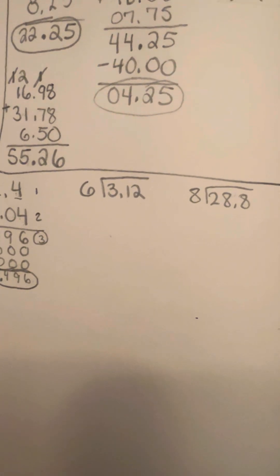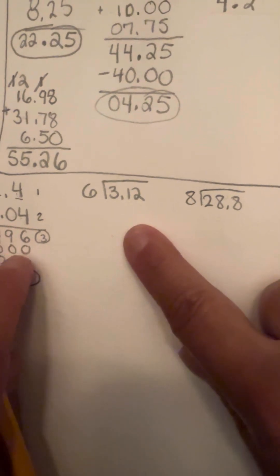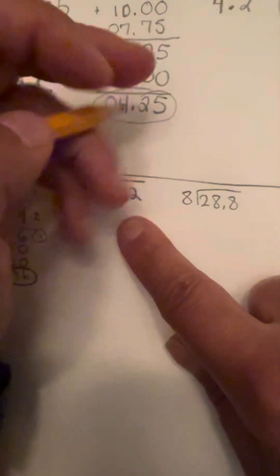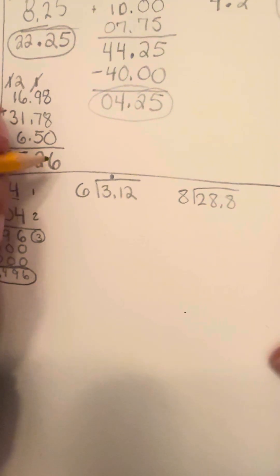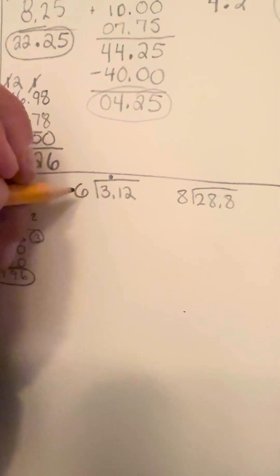So when we're dividing with decimals, notice that with this number here, we're just going to put the decimal where it is right off the bat. So we're just going to line it up, put it above it, and we're going to go ahead and we're going to see what we have happening.